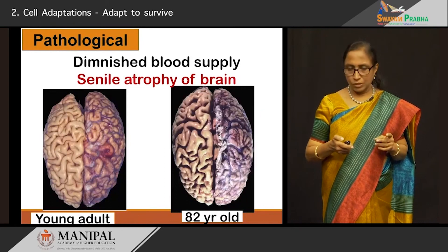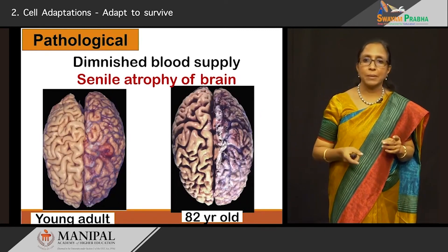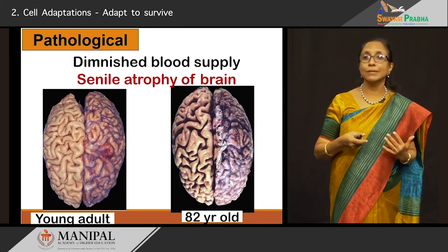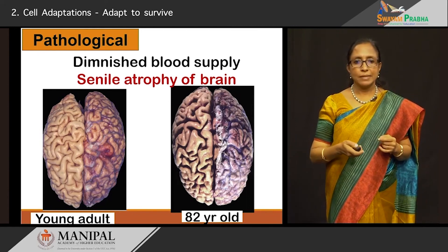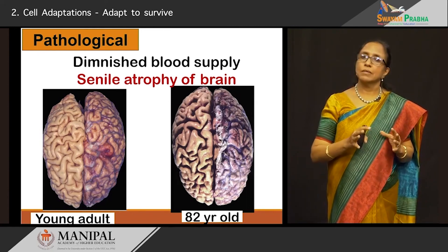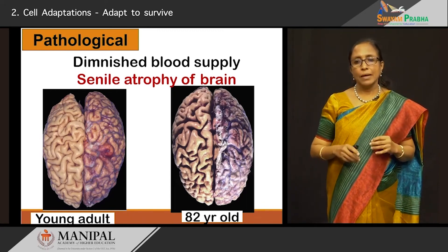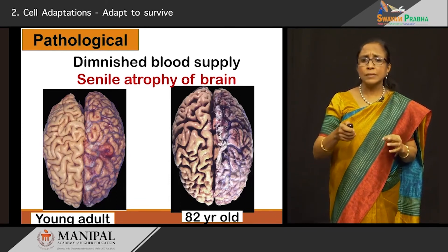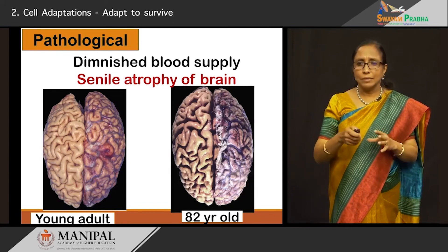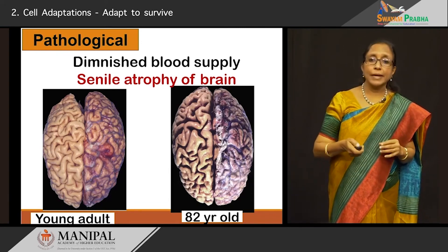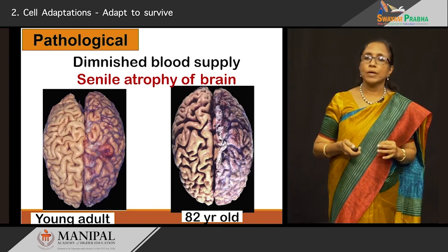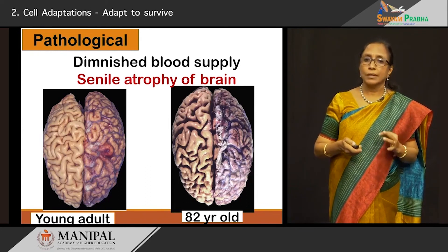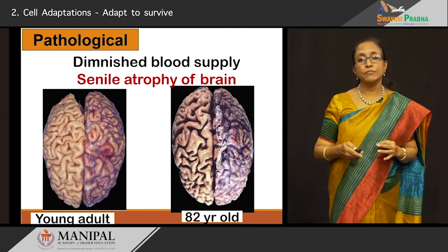The next situation is when there is a decrease in the blood supply, which can be seen in senile atrophy of the brain seen in the older age group. In a young adult, the surface of the brain shows normal gyri and sulci. In the brain of an 82-year-old person, we can see that the gyri and sulci are narrowed, there is a lot of space, and the gyri are also thinned out. This is what we mean by decrease in blood supply causing brain atrophy — it can occur in various other organs too.